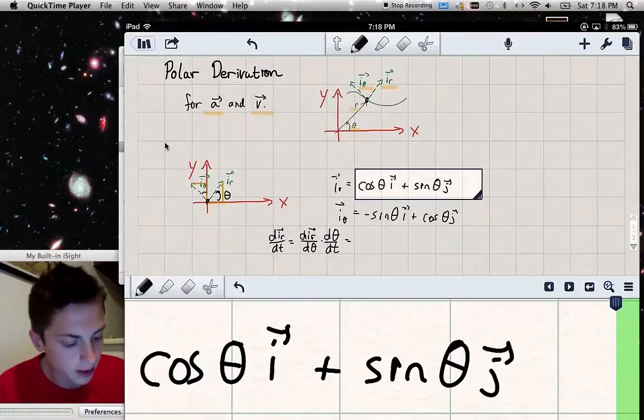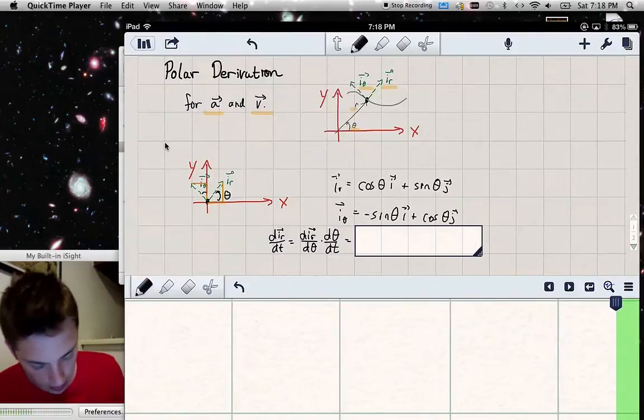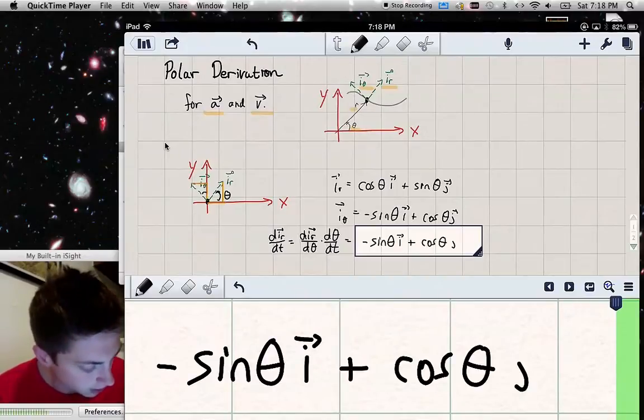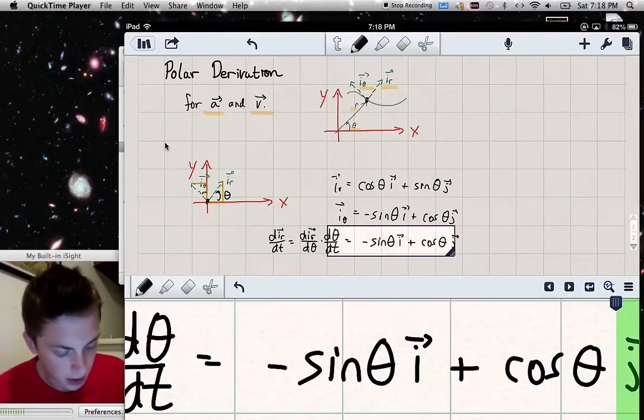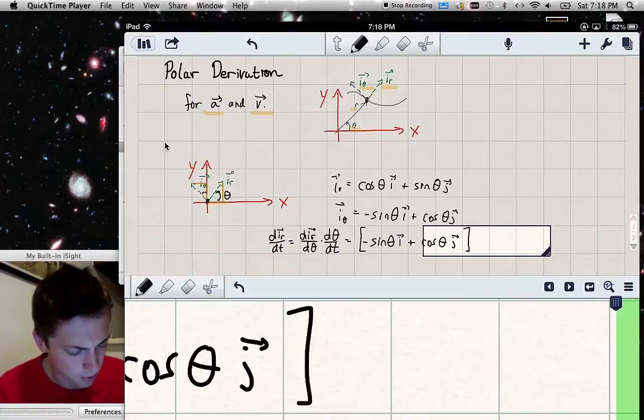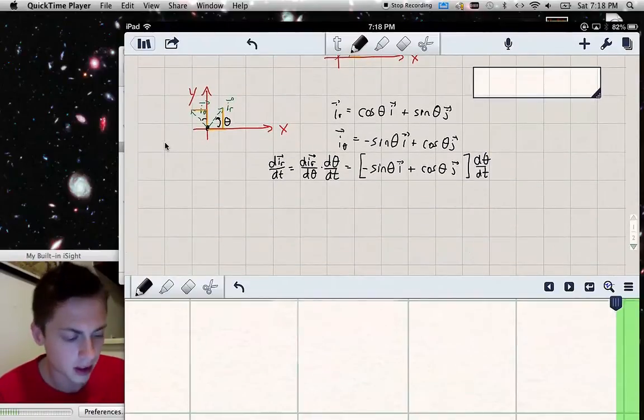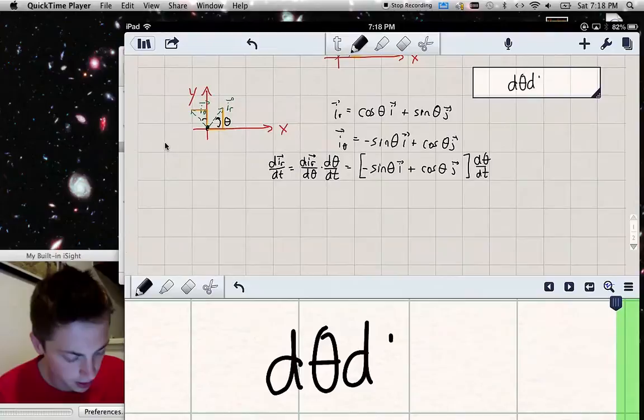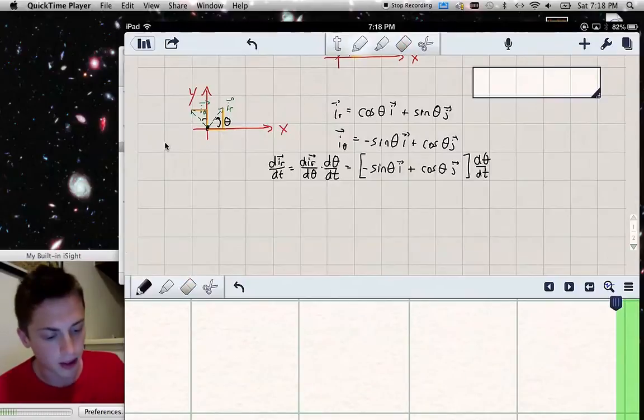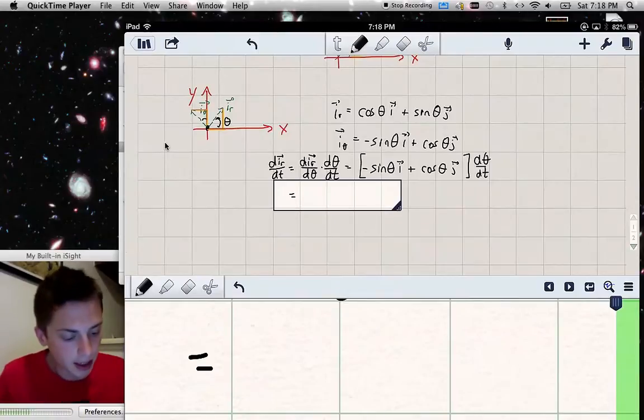So di_r over d theta is negative sine theta i plus cosine theta j. So negative sine theta, we have to multiply that by the unit vector i plus the cosine theta j. Do not leave out the unit vectors like I almost did verbally right there. That would be a big no-no. And now we multiply this by the unknown rate, d theta dt, which we have to leave in there. By the way, when I say d theta dt, I don't mean d theta times dt, I mean the derivative of theta with respect to time.